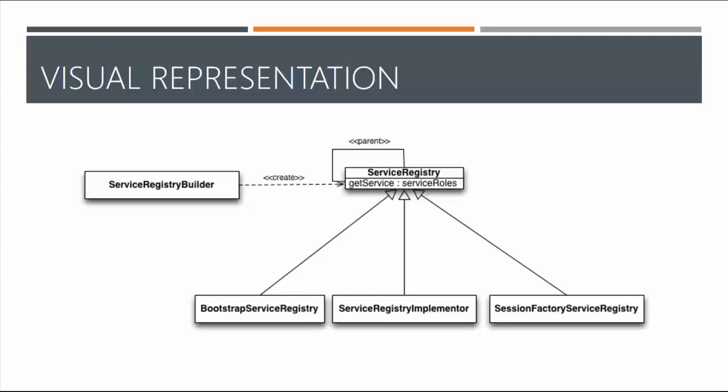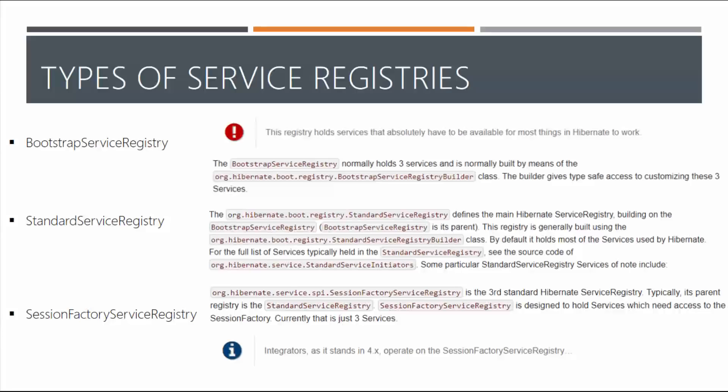Here's a visual representation: the service registry builder creates a parent service registry which uses getService and has service roles. The three types of service registries shown at the bottom are the bootstrap service registry, the standard service registry implementer, and the session factory service registry — all of these link up to the parent.